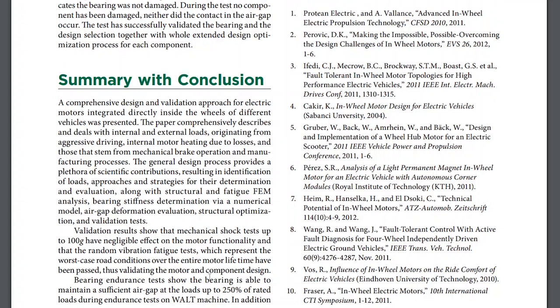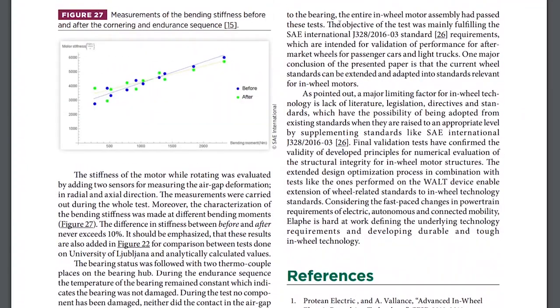Bearing endurance tests show that the bearing is able to sustain a sufficient air gap at loads up to 150% of rated loads during the endurance test on the Walt machine. In addition to the bearing, the entire in-wheel motor assembly had passed these same tests. So basically, they've looked at every kind of shock and load that they would expect to see and tested them for the expected lifetime of an automotive wheel, and they've passed all those tests.